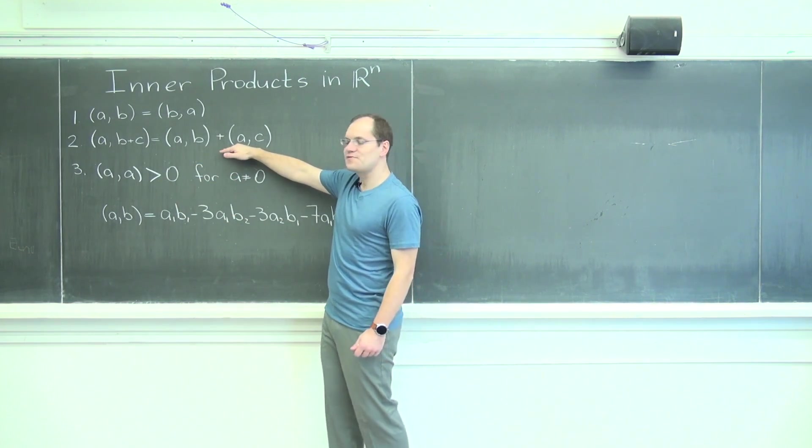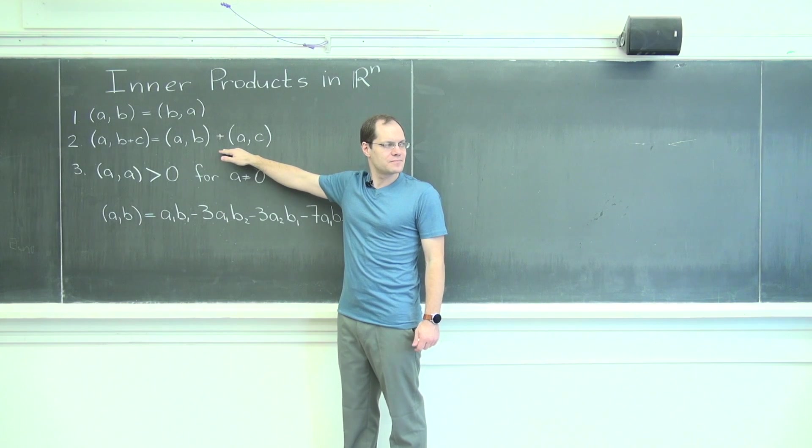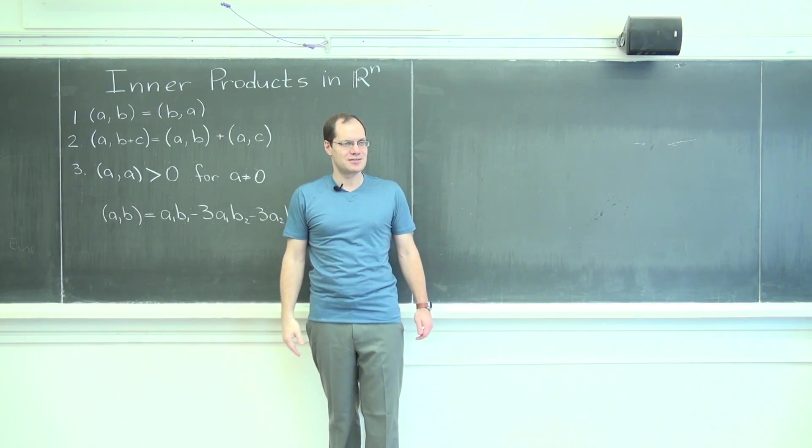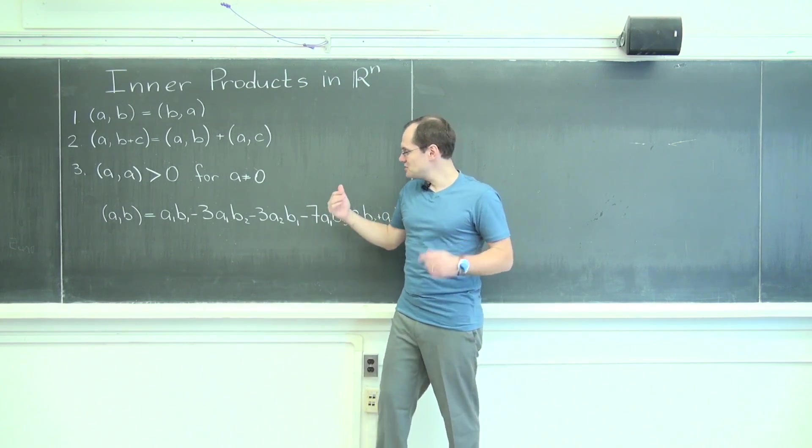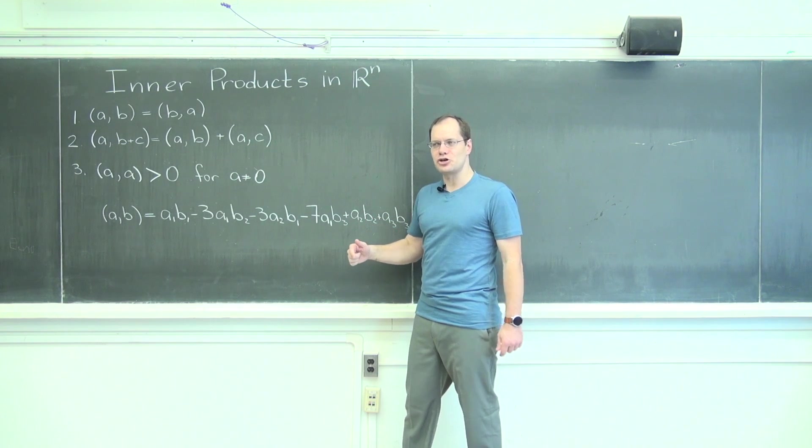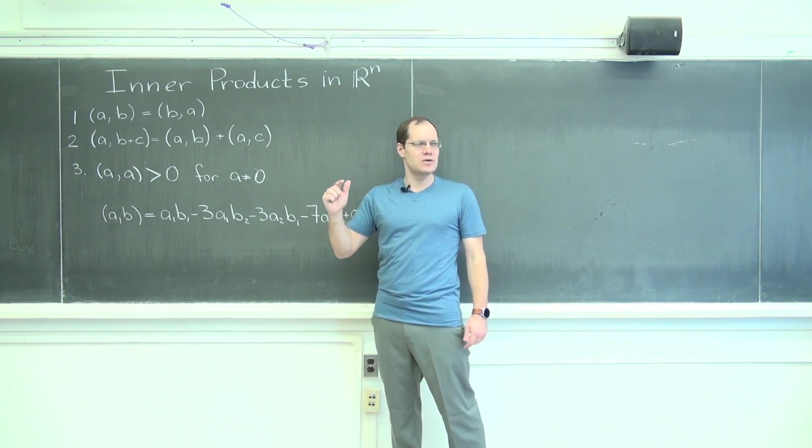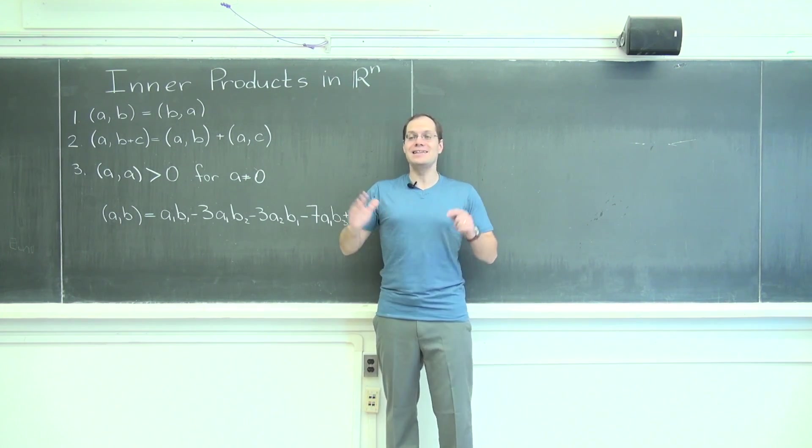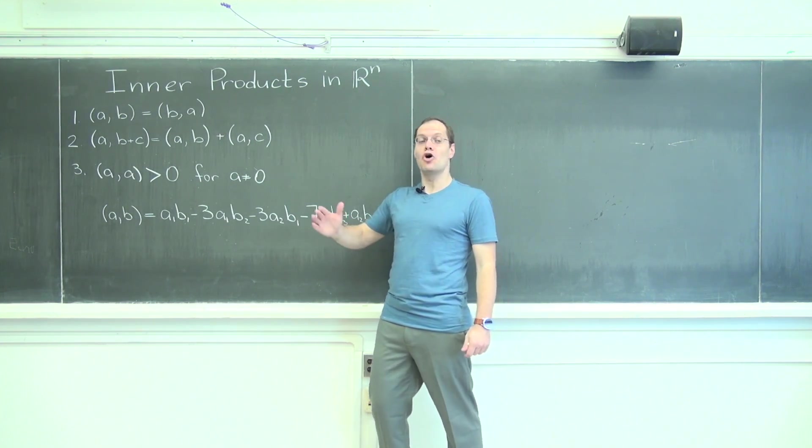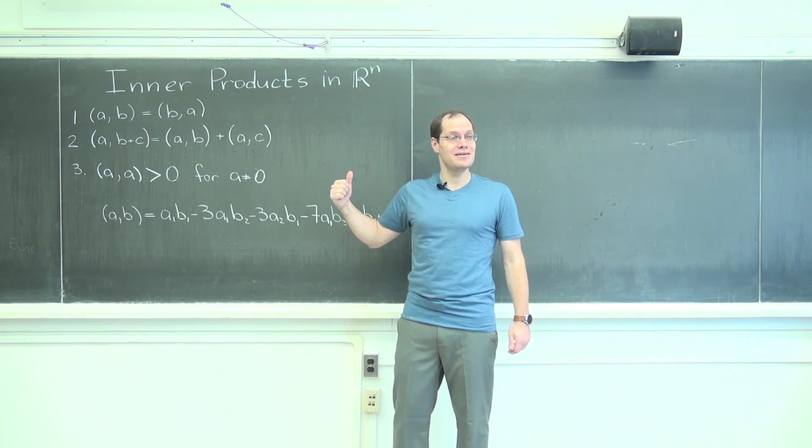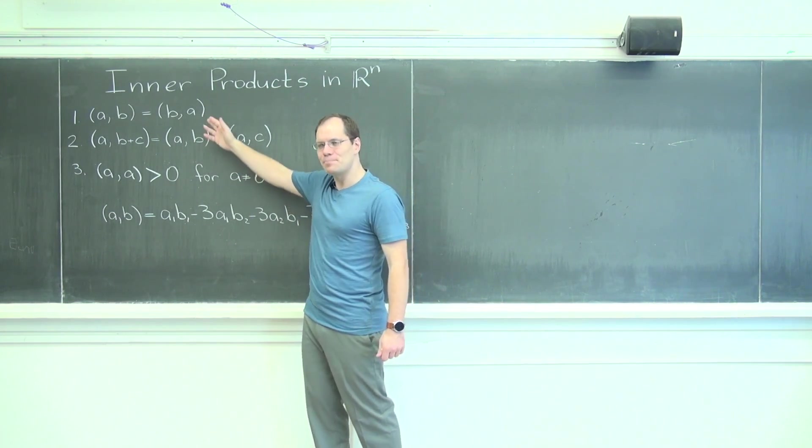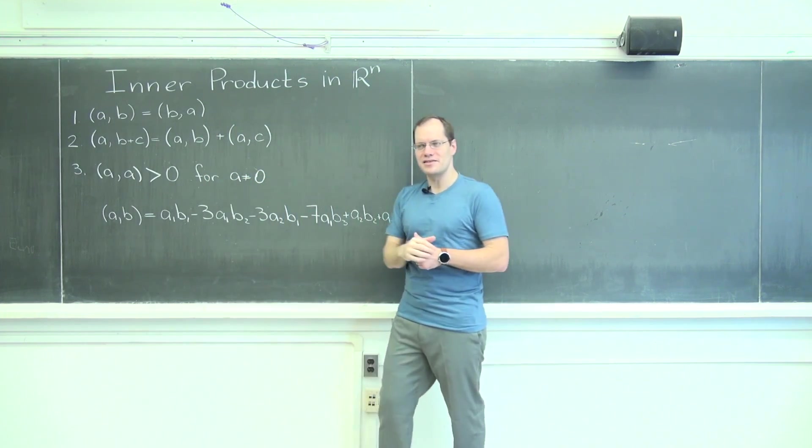This expression satisfies the distributive property. And what are the implications of the distributive property requirement? The implication is that all you can really have is these individual terms. And within each term, you have one A entry and one B entry and nothing else. You can't square them. You can't omit them. You can't just have three A because that will break distributivity coupled with commutativity.